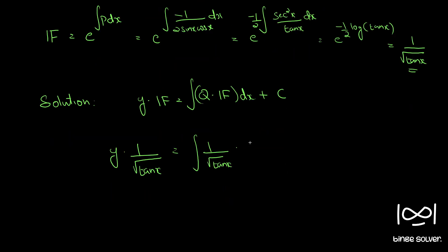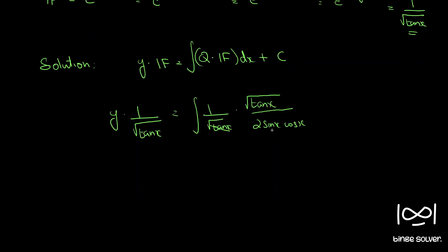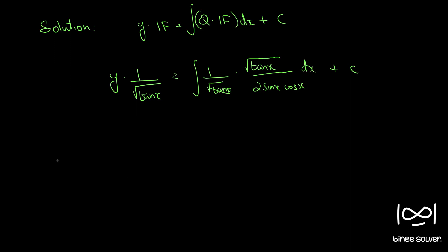So q is tanx/sin2x. Writing sin2x as 2sinx·cosx, and combining with 1/√(tanx), we get the integrand as √(tanx) divided by 2sinx·cosx. Taking 1/2 outside and simplifying, we again divide numerator and denominator by cos²x.